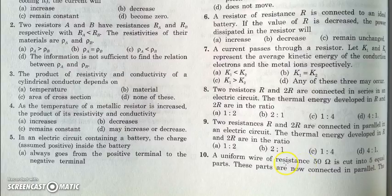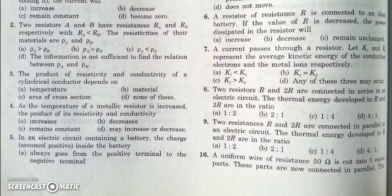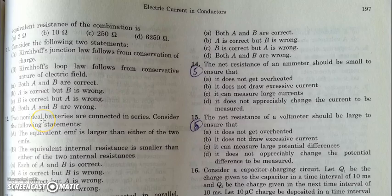In the next question, a wire of resistance 50 ohms is cut into five equal parts and these parts are connected in parallel. Each part has resistance 10 ohms. When five 10-ohm resistances are connected in parallel, the equivalent resistance is 10 divided by 5, which equals 2 ohms. So the answer should be A.